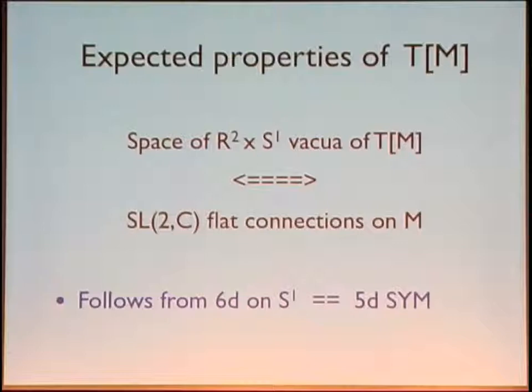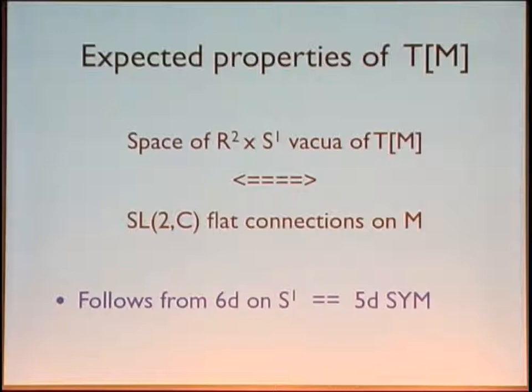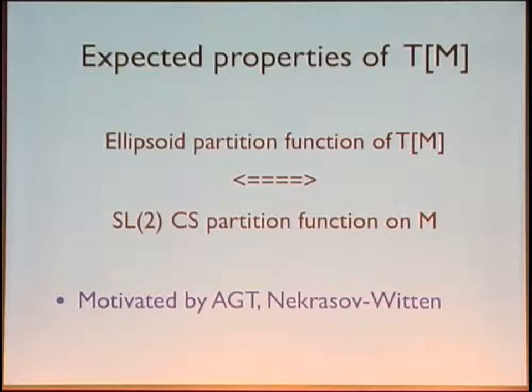One of the properties, as Sergei was reviewing, follows very directly from the fact that a six-dimensional theory on a circle is something we understand very well. The moduli space of vacua of these theories T[M], when compactified on a circle, can be matched against the space of flat connections on that manifold. And also there is a quantum variant of this statement: the partition function of these theories on an ellipsoid gives you the partition function of Chern-Simons theory on the manifold, or at least some analytic continuation of Chern-Simons theory defined in an appropriate way.